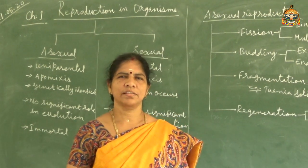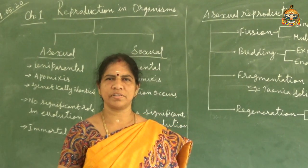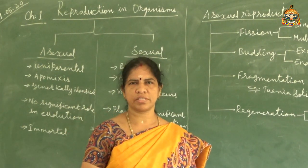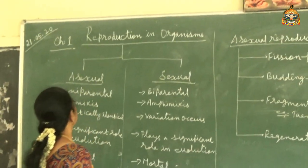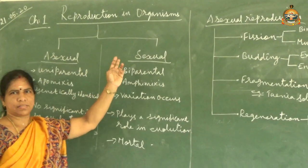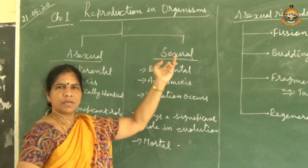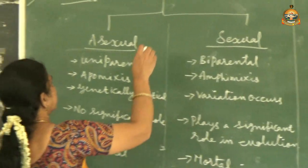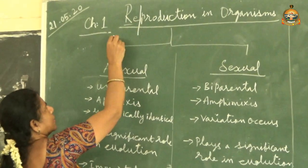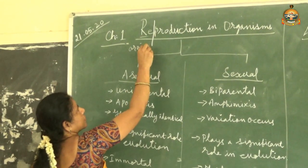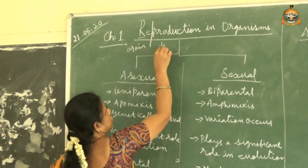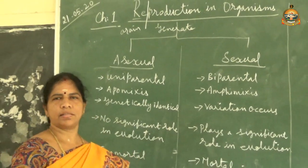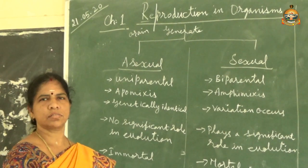Good morning. Let us start the first chapter in Biozoology. Chapter 1 is Reproduction in Organisms. You know the meaning for an organism. What is meant by reproduction? Reproduction - 're' means again, 'production' means to generate. So generating the organism again is known as reproduction.